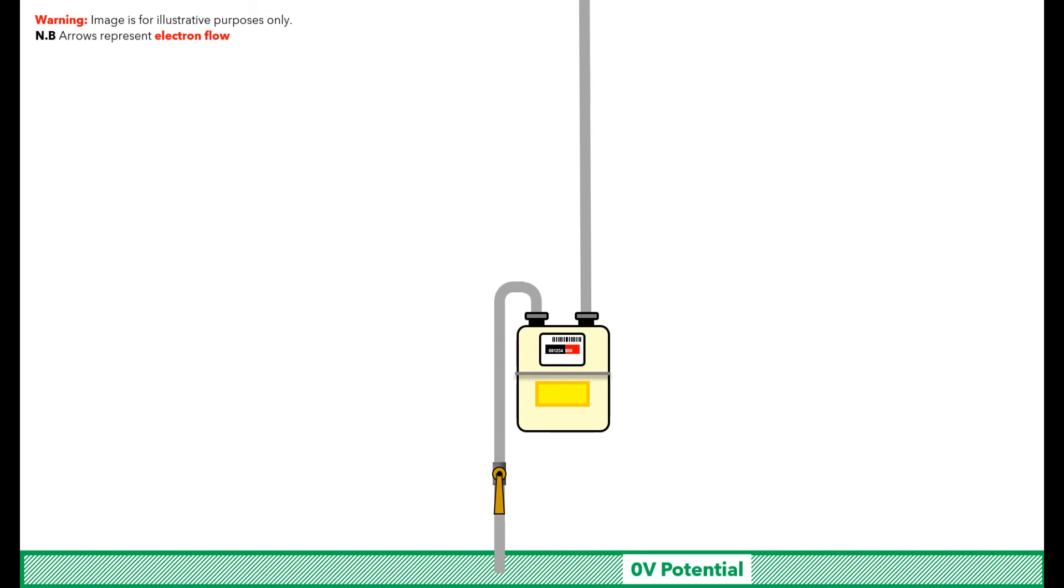This is one of the reasons that competent gas engineers put a temporary connection across the pipe work when removing the gas meter using these jump leads. If the installation develops an electrical fault while they are working on the installation, and fault current is trying to flow to that zero earth potential.